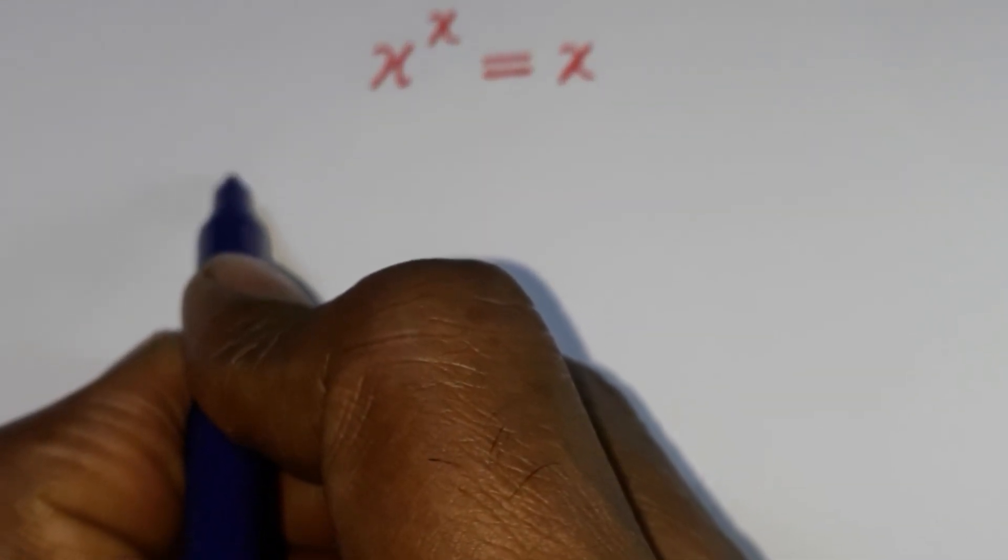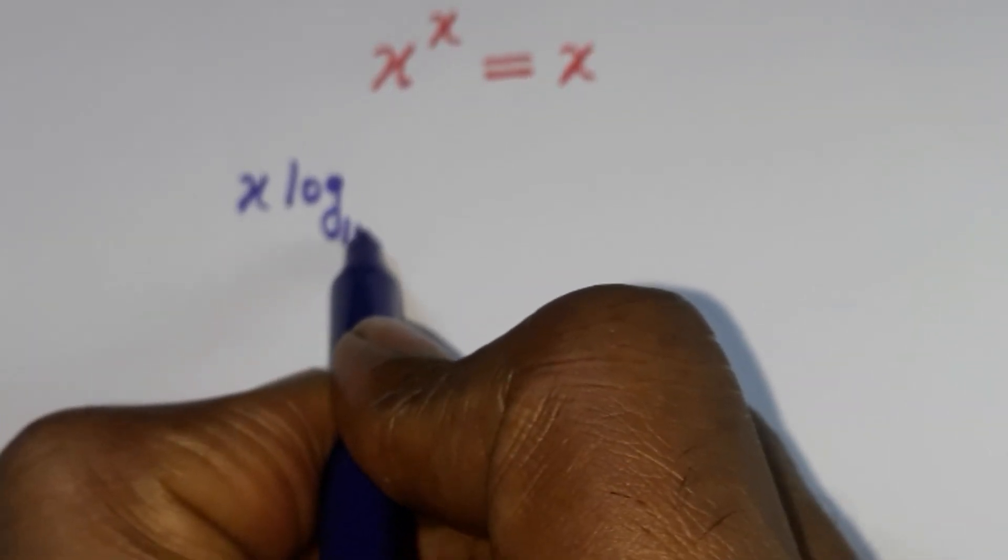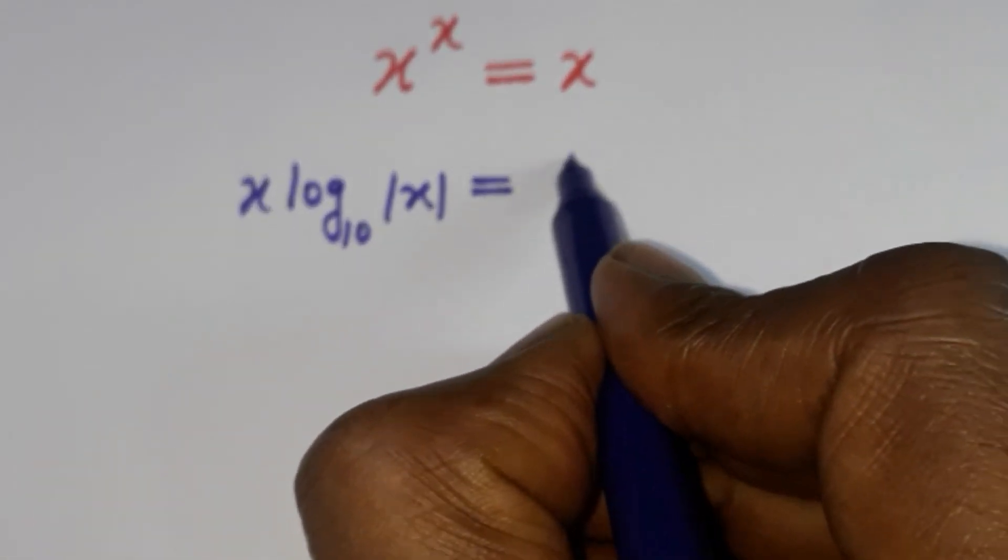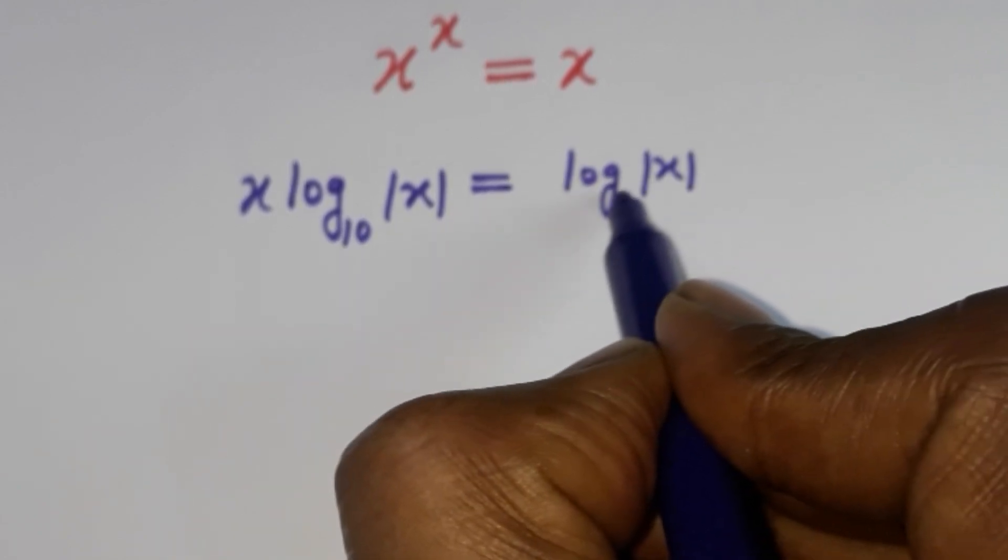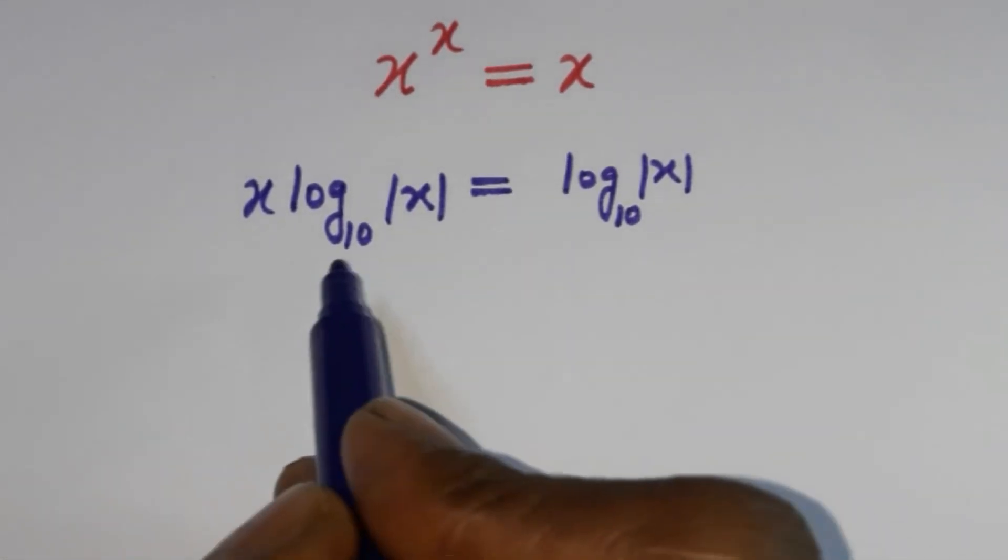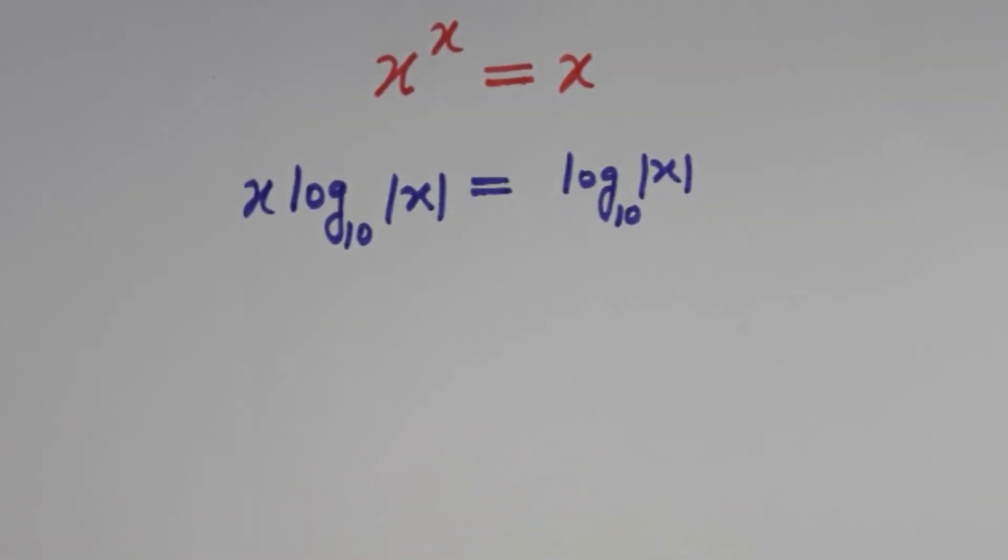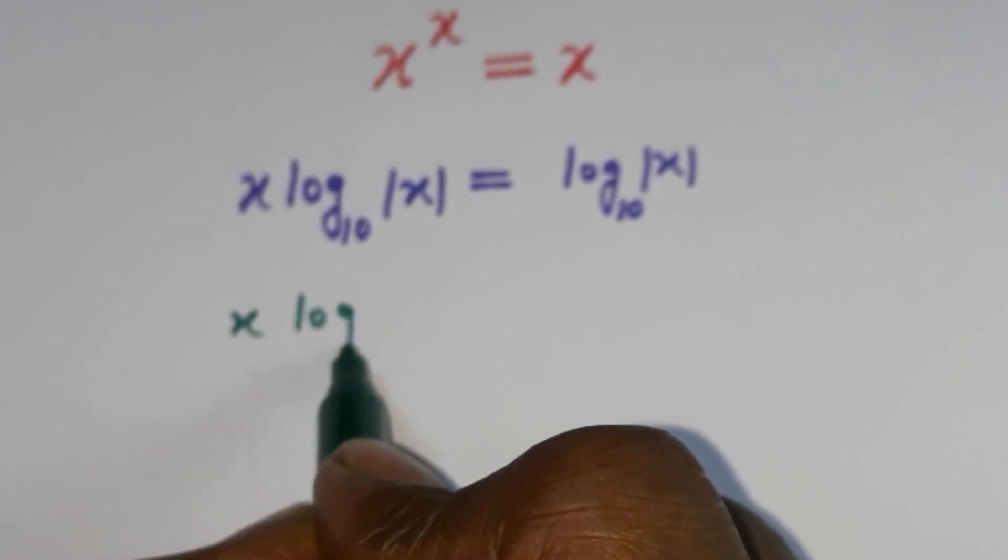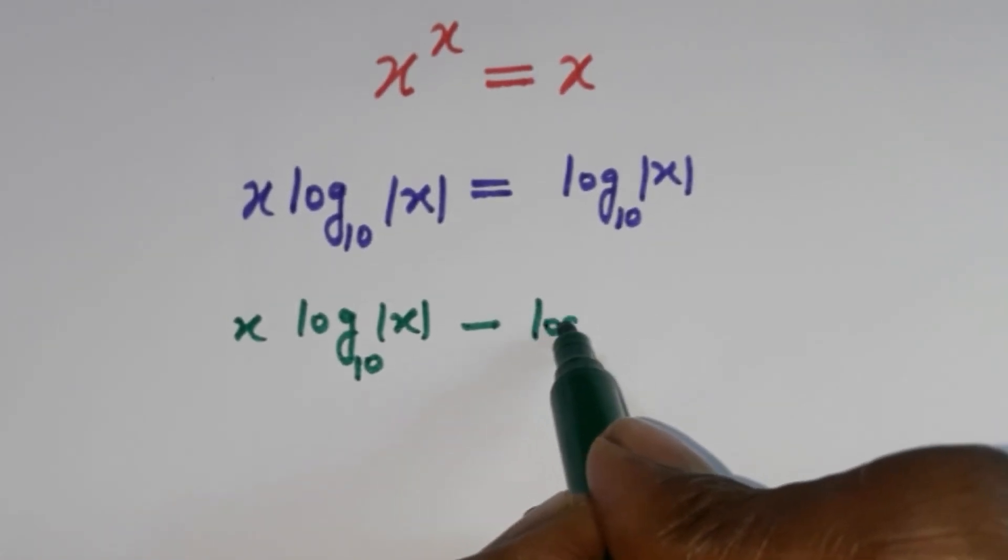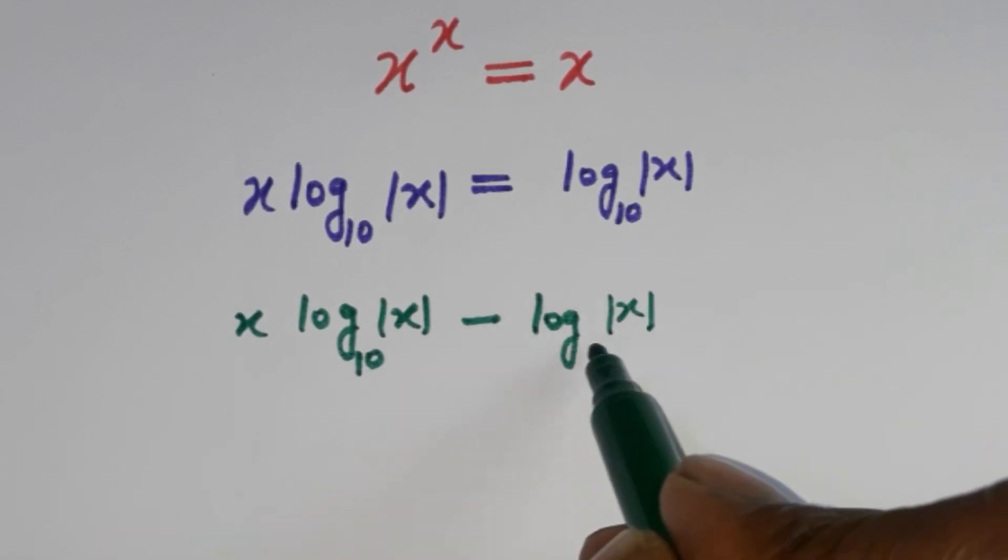So log having base 10, that is mod x, is equal to log mod x base 10. And then I can have this one on the left side, so we have x log mod x base 10, and this will be here on the LHS side, so this is log mod x base 10.